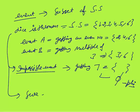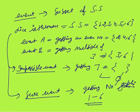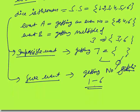What is a sure event? A sure event is one that will definitely happen. When the dice is thrown, getting a number from one to six is definitely a sure event. Either one, two, three, four, five, or six will come — this possibility is 100%. This event will definitely happen once you throw the dice, and this is a sure event.